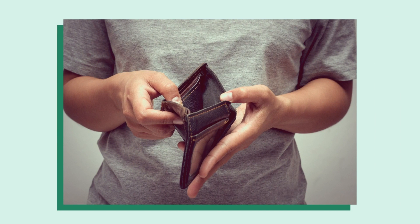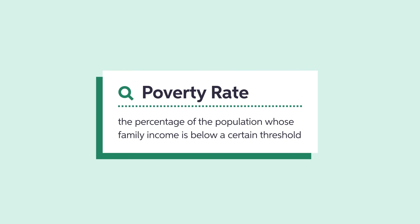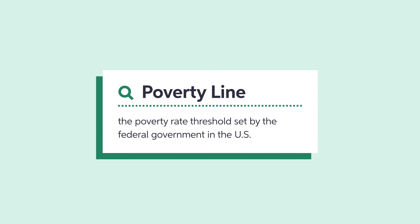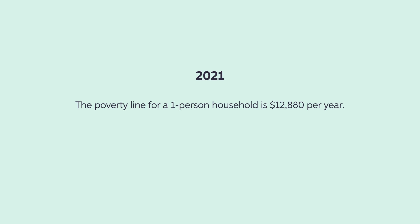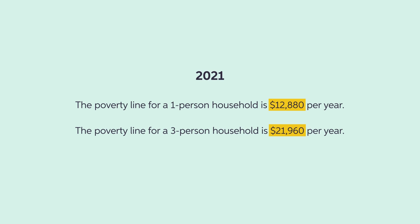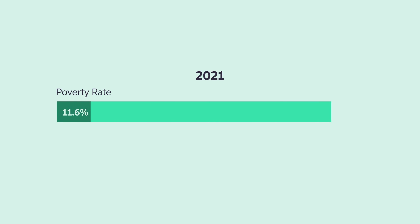One key question about income inequality is how countries and societies can do better about poverty. To study this question, we need to first define measures of poverty. One popular measure is the poverty rate, which is the percentage of households in a country with family income below a certain threshold. In the U.S., this threshold is set by the federal government and is called the poverty line, which depends on the number of persons in the household. For example, the poverty line for 2021 for a one-person household is $12,880 per year, and for a three-person household it is $21,960 per year. In the same year, the U.S. poverty rate was 11.6%, which translates to almost 38 million people in poverty, according to the U.S. Census Bureau.